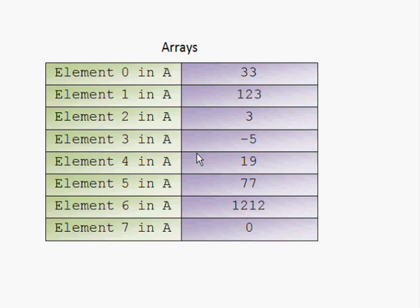An array is a number of variables having the same name and having the same data type. When you want to access any element in the array, you just provide the location of the variable you are trying to access.